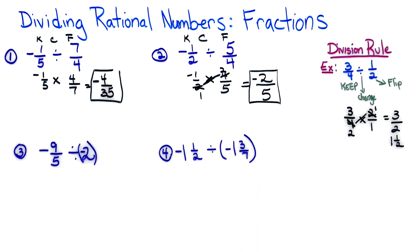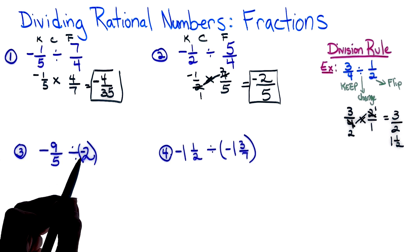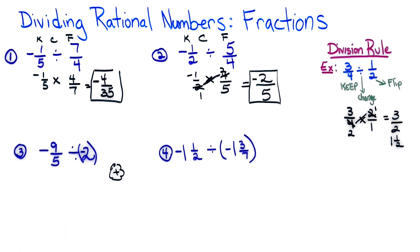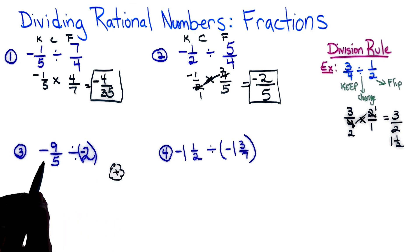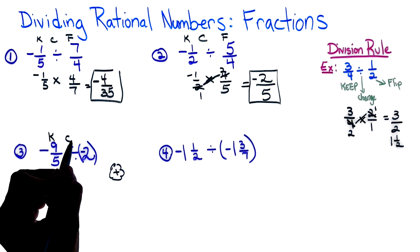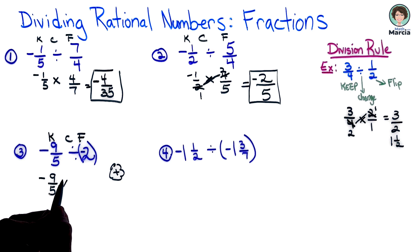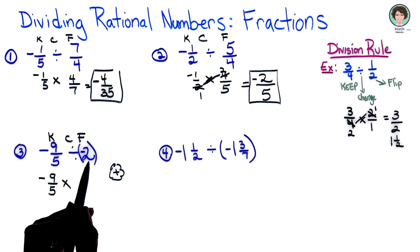Well looking at number three I see I have two negatives, so here's me reminding myself, my answer is actually going to be positive. So I'm going to keep, change, and flip. So I'm keeping the 9/5, negative 9/5, changing the sign, and I am going to flip the negative two. Remember it's over one so it's going to be a negative 1 over 2.